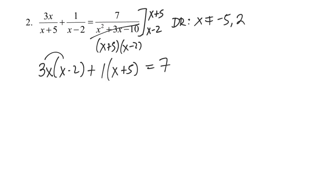Now, from here, I'm going to distribute, and that's going to give me 3x squared minus 6x plus 1x plus 5. I'm going to go ahead in the same step, if that's okay with you, and subtract the 7 to the other side, and then collect my like terms. So I've got 3x squared minus 5x minus 2 is equal to 0.